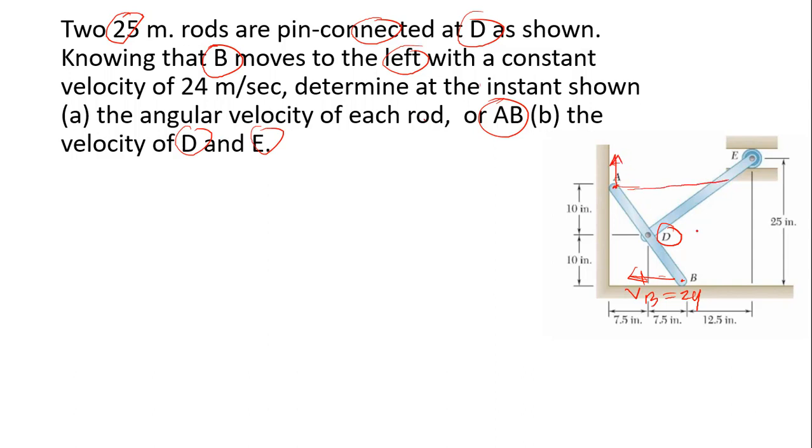Point D and E - we find the instantaneous center point by drawing a perpendicular line. Where it intersects, we call this point C. We apply the formula: velocity equals omega (angular velocity of the rod) times the distance to point C.